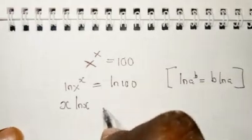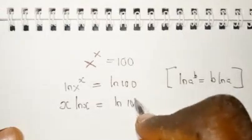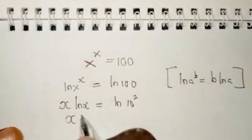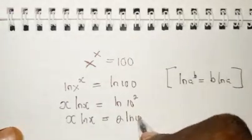Therefore, we are going to be having x times the natural log of x equals the natural log of 100. We can write 100 as 10^2, so using this property, you have x times ln(x) equals 2 times the natural log of 10.